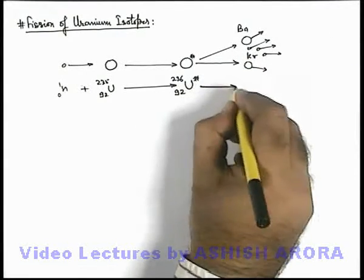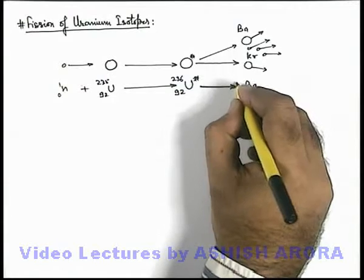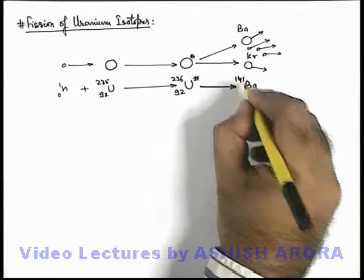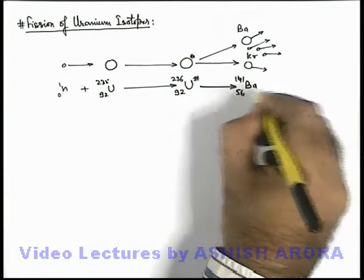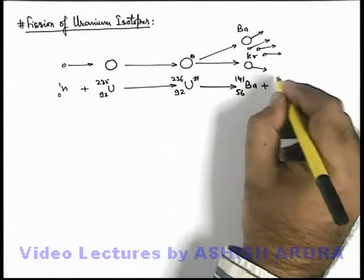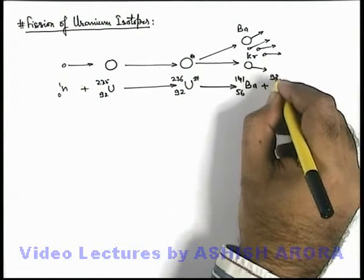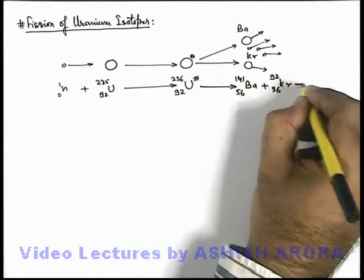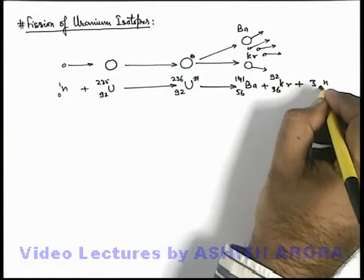The reaction is further written as barium, which has mass number 141 and charge 56, plus krypton with charge 36 and mass 92, plus three neutrons (0,1) emitted.